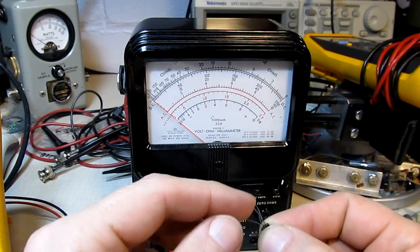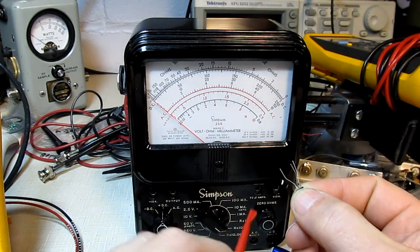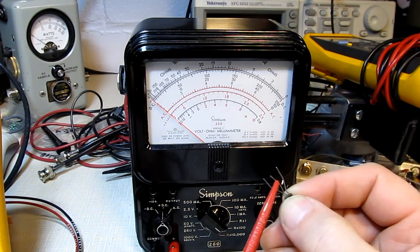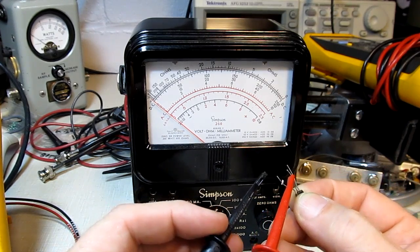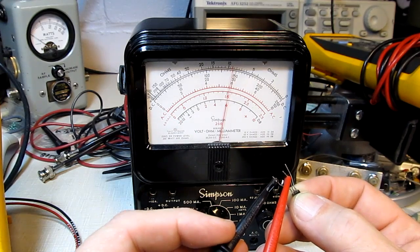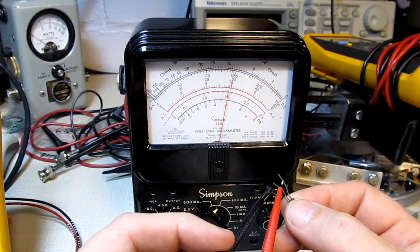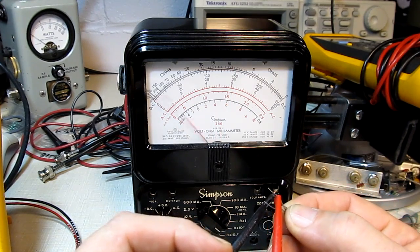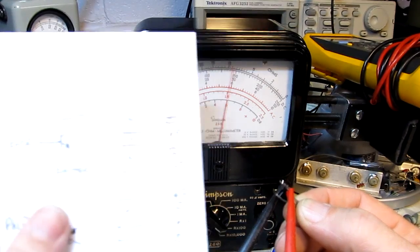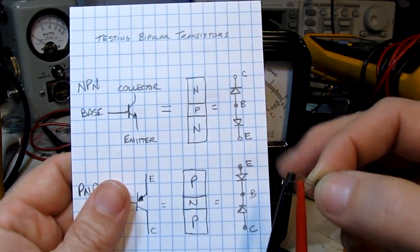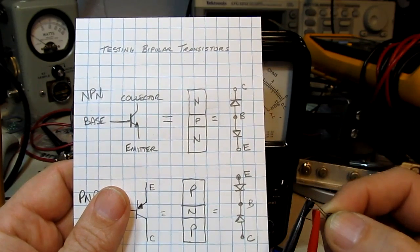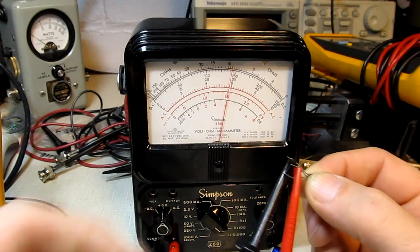So in this case the center lead here is the base so let's start by forward biasing some junctions I'm going to connect the positive lead here to the base and if I connect up in this case to the collector I can see some deflection on the meter indicating that I've got some conduction in that direction and if I connect up to the emitter I also see that and that's what you'd expect to see looking at the diagram here that base to collector base to emitter both of them are going to give me forward bias or some conduction so that's what I'm seeing.